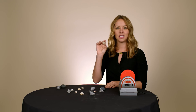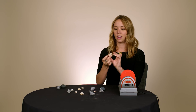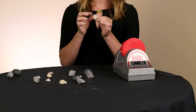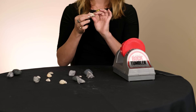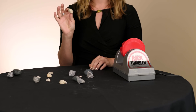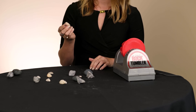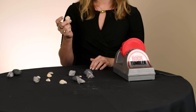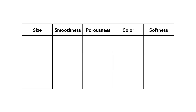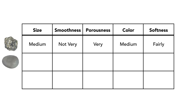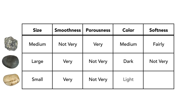And lastly, this one right here is pretty small. It's smooth, it's really light in color, and it's not porous and not soft. So we'll fill out this grid and look at each rock in our sample and look for rocks that have similarities across all of these attributes.